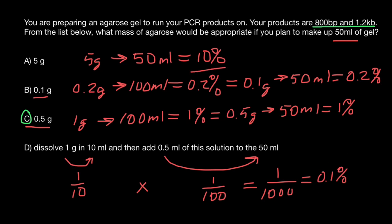So 10% is too strong, 0.2% is too weak, 0.1% is too weak, but 1% is the exact concentration we are looking for in order to separate bands of this size. And this is all for today. Subscribe and see you in the next video. Goodbye.